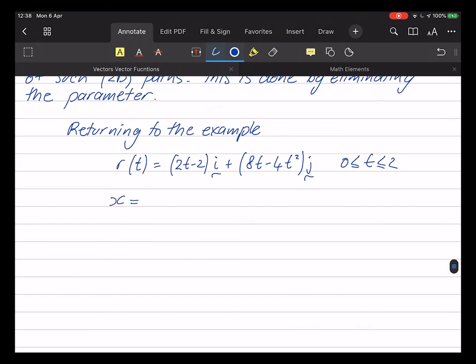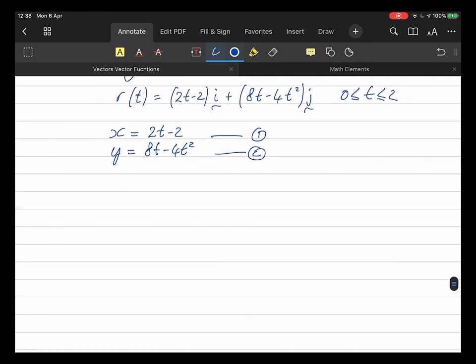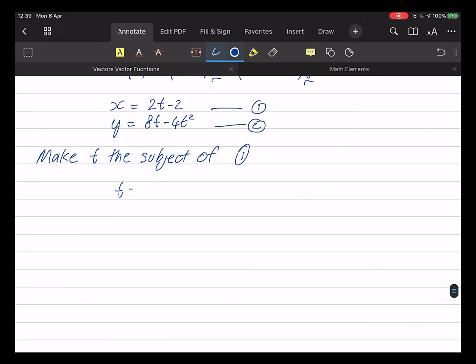So in this case, I can see x is this thing and y is this one. And I effectively solve simultaneously. So I make, I'm going to eliminate t. Make t the subject of one of these. Much easier to pick the first one. So I end up with t equals x plus 2 on 2.